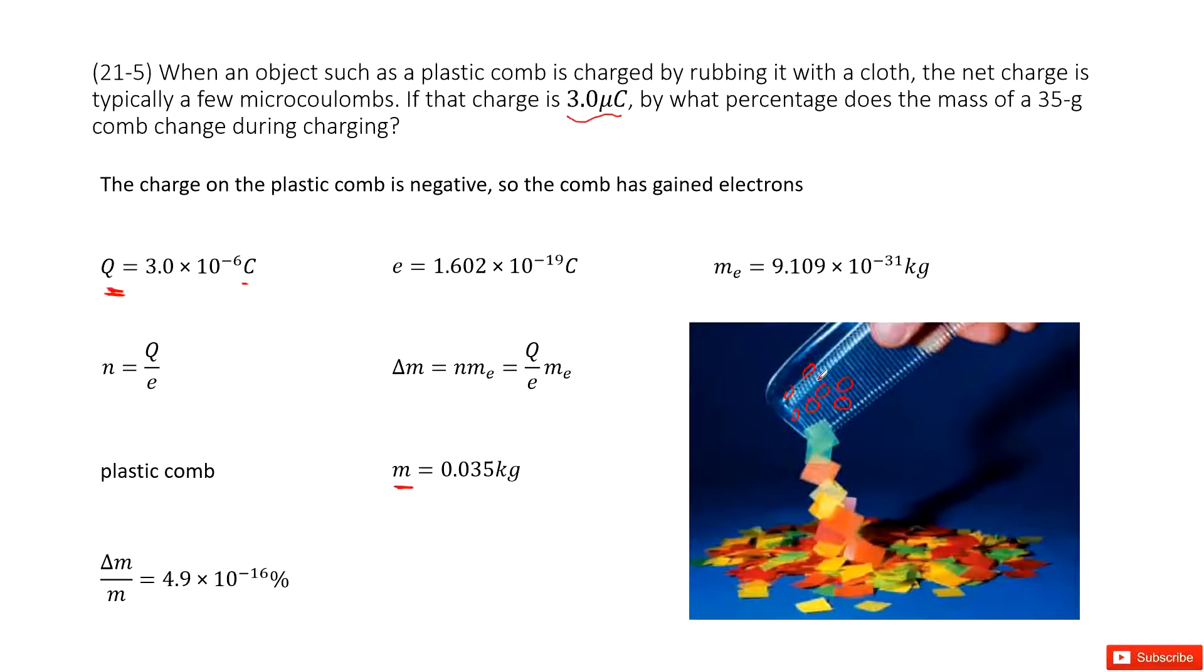So it looks like we need to find the mass for these electrons and use this electron mass divided by the total mass. This is called the percentage change of the mass, right?